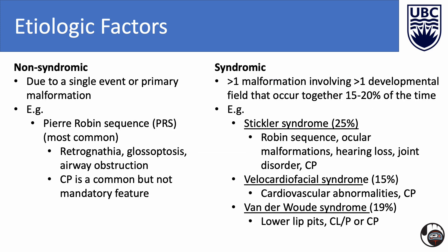Cleft lip and cleft palates can be divided into non-syndromic and syndromic clefts. Non-syndromic clefts are one or multiple anomalies due to a single event or primary malformation, whereas syndromic clefts are more than one malformation involving more than one developmental field that occur together at least 15 to 20% of the time. An example of a non-syndromic cleft is Pierre Robin sequence, which includes retrognathia, glossoptosis, airway obstruction, and sometimes a U-shaped cleft palate. The primary malformation is mandibular hypoplasia, which displaces the tongue posteriorly leading to glossoptosis. The tongue's abnormal position interferes with the closure of the palatal shelves during development, resulting in cleft palate.